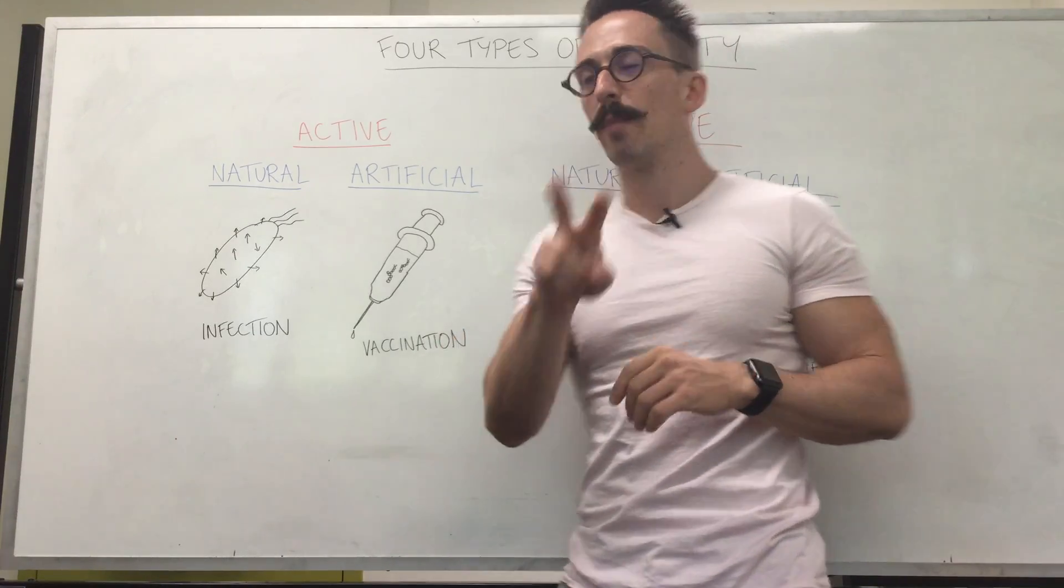For example, people back in the 1950s were experiencing polio. Now we have a vaccine for polio in which we get exposed to an inactivated form of that infection and our body can create antibodies against it so we no longer get polio. We now have created immunological memory against an inactivated infection. So that means there's natural and artificial underneath the active type of immunity.